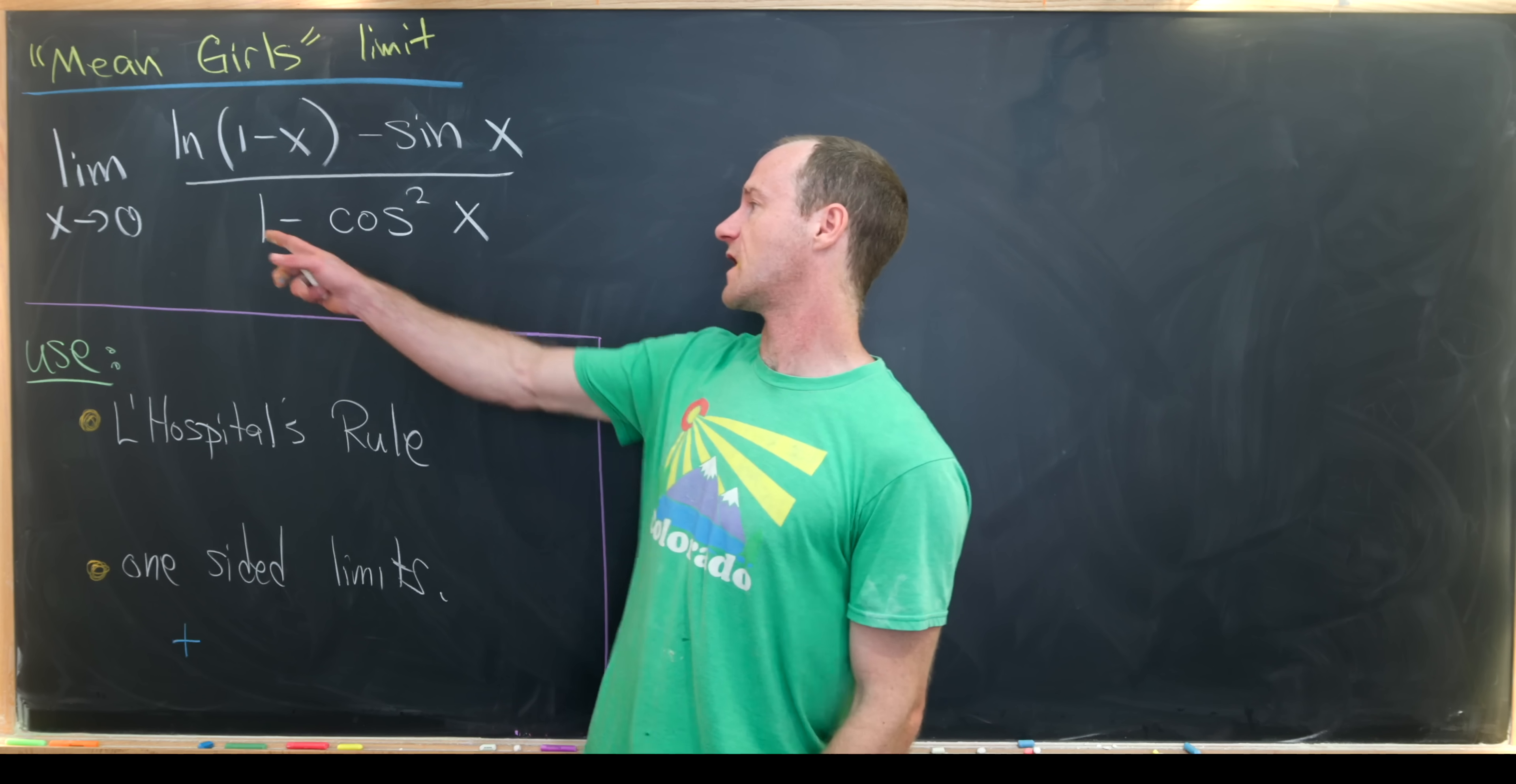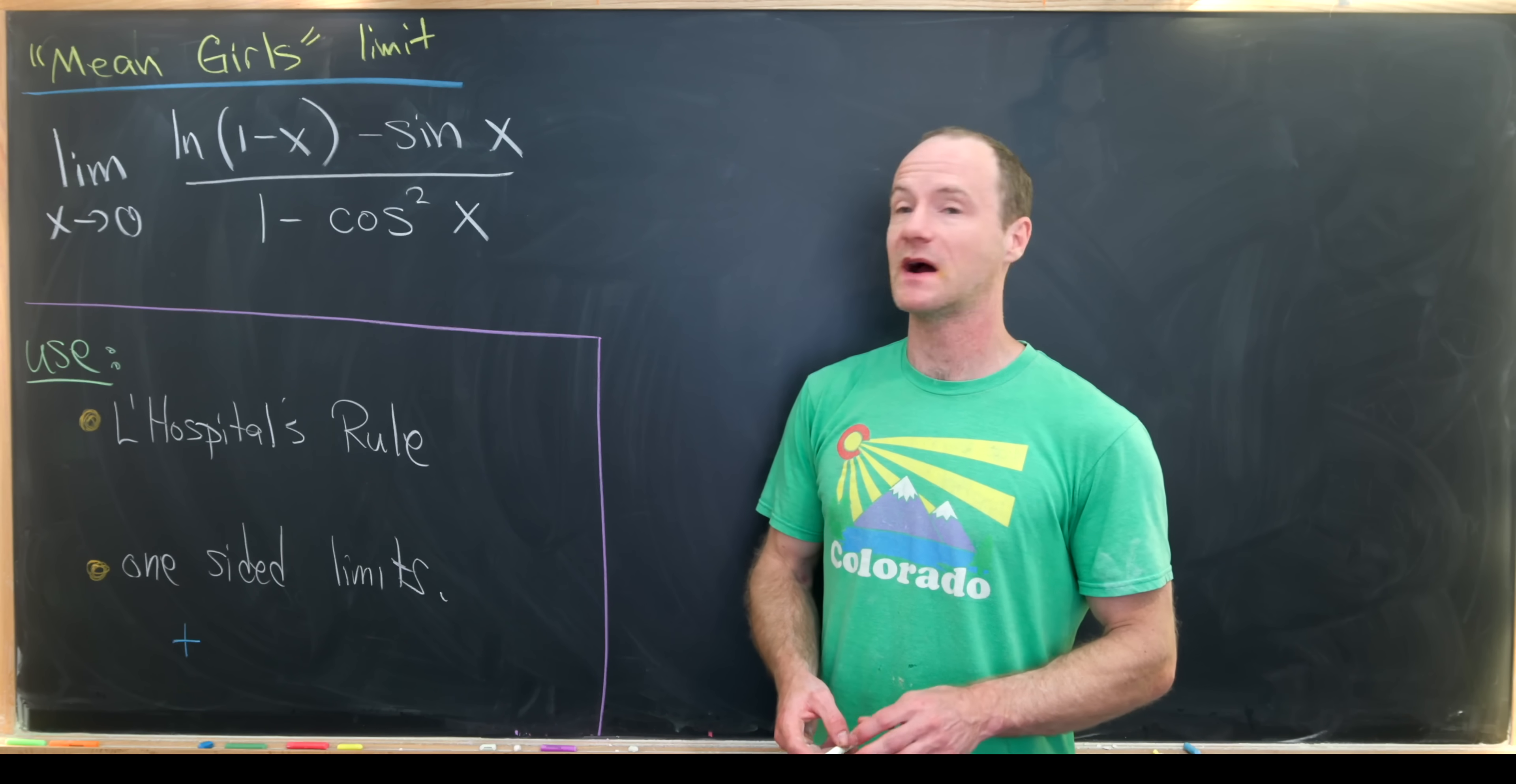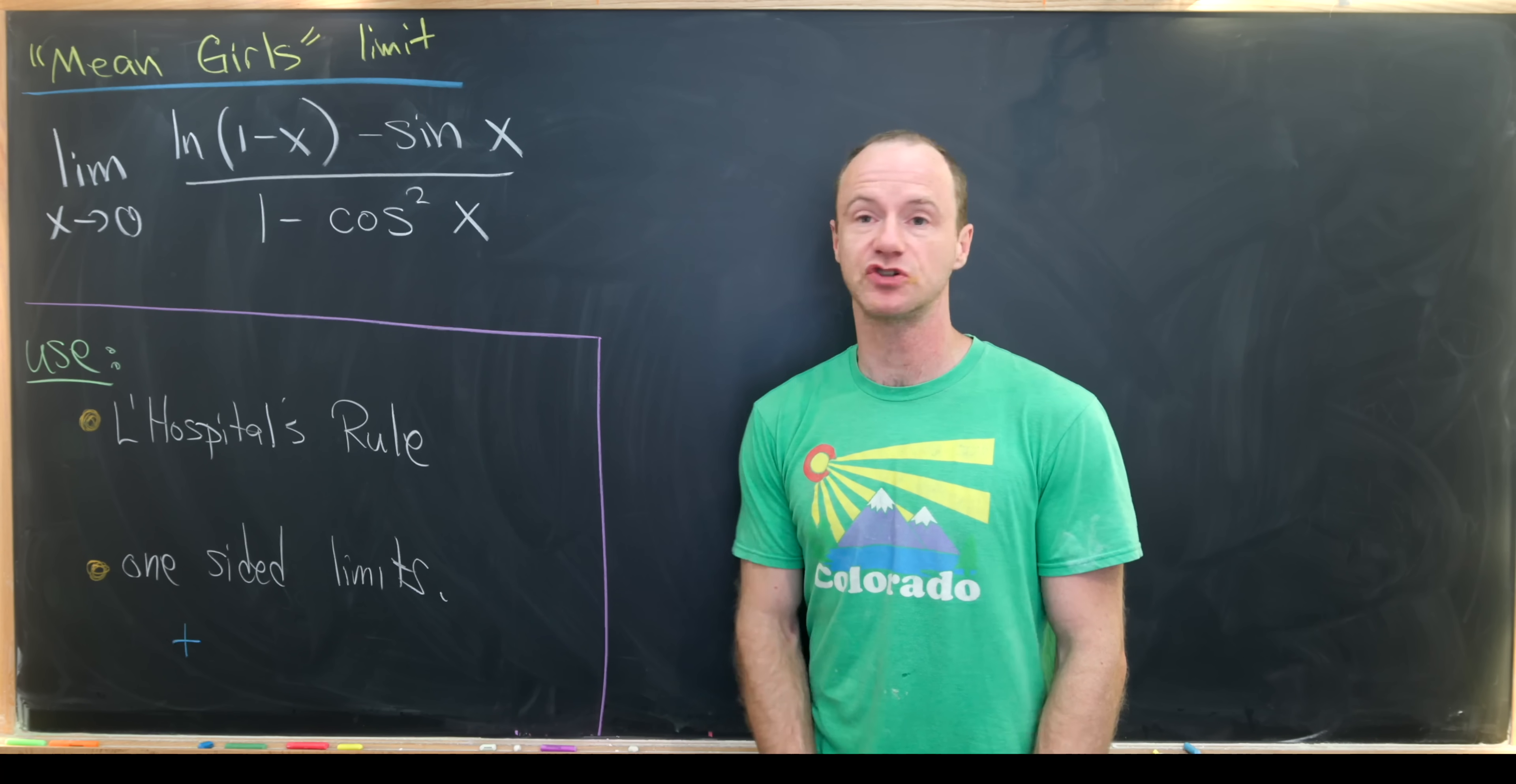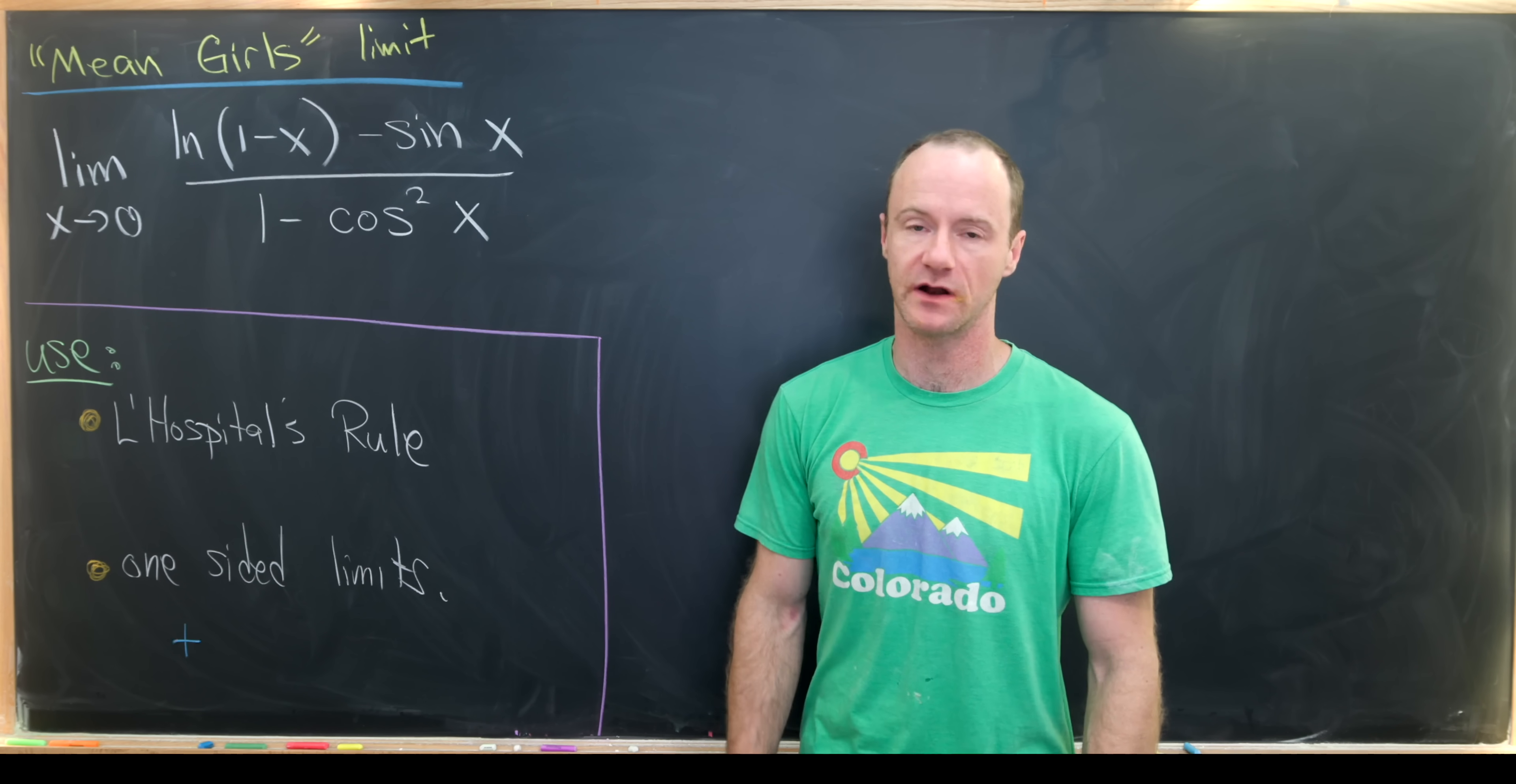In particular, we're going to find the limit as x goes to 0 of the natural log of 1 minus x minus sine x over 1 minus cosine squared of x. We're actually going to evaluate this two different ways. The first way will be using L'Hopital's rule and the notion of one-sided limits, and the second way will be by taking a Taylor or McLaurin expansion of the numerator and the denominator.